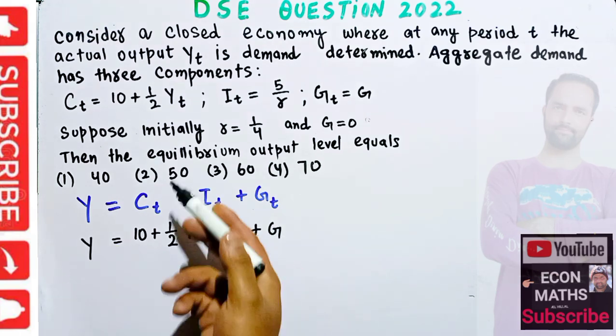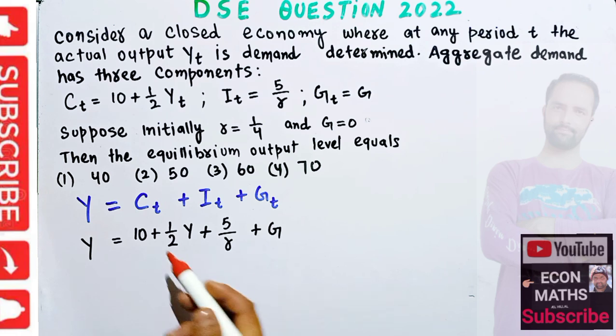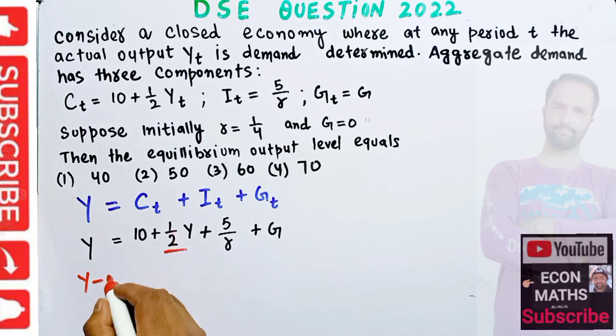We have to solve for equilibrium output level, that means we need to solve this equation for Y. If I transpose this Y on this side, we get Y - (1/2)Y.